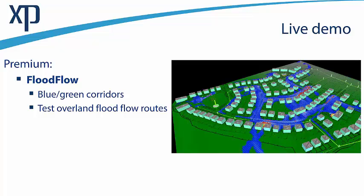Penultimately, I'll take a look at the premium bundle, which includes the flood flow module. The benefit of using the flood flow module is to identify outfalls in the first instance and identify the blue-green corridors. I would love for engineers to bring in the land survey, deluge it with water, identify the overland blue-green corridors, and provide that to the architect so they can work more sympathetically with the overland flood routing already in place. We also need to test overland flood flow routes when we go way beyond the design.